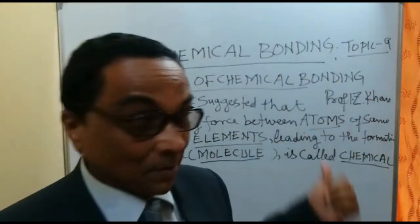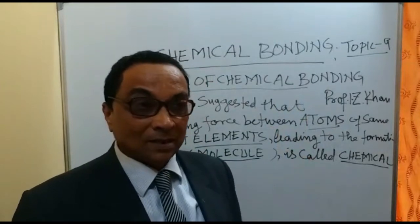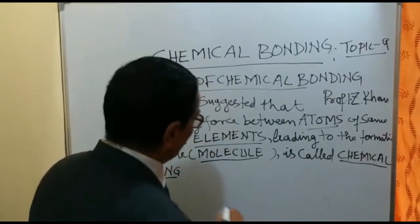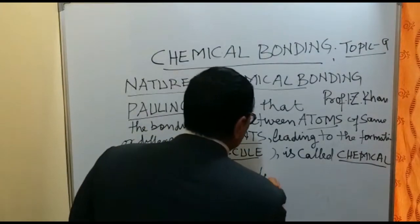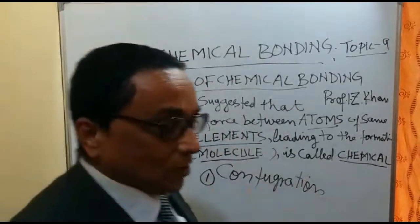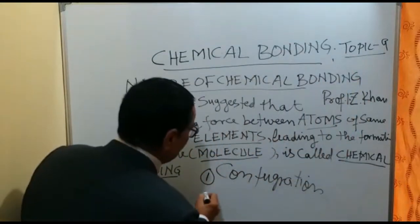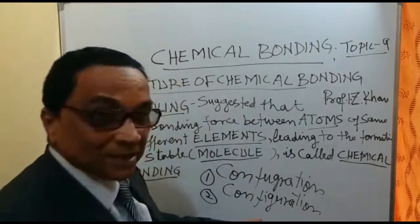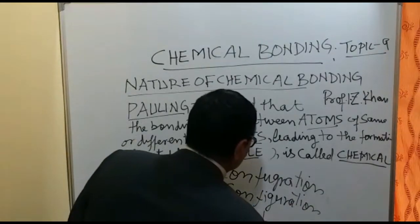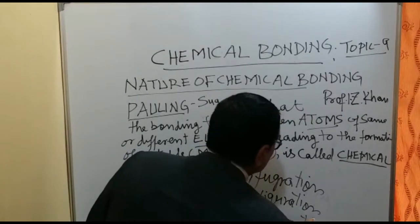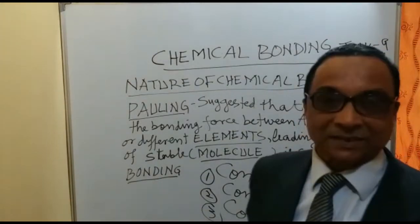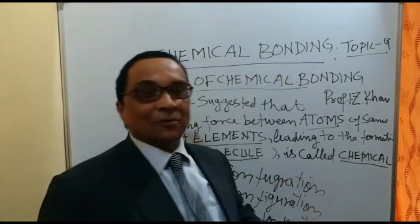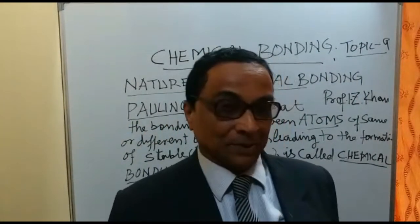Before going to chemical bonding, I am going to explain more about the arrangement of electrons in the atom. For that arrangement, three terms are widely used. The first is called configuration, the second term widely used is conformation, and the third one is called confirmation.